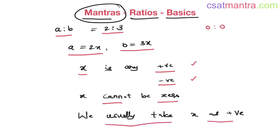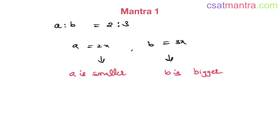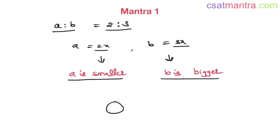We usually take x as a positive number, so let's take x as positive. When a is 2x and b is 3x, you can say a is smaller and b is bigger. So in the question, if a is to b is 2 is to 3, in the options you have to see that the a value should be lesser and the b value should be bigger.